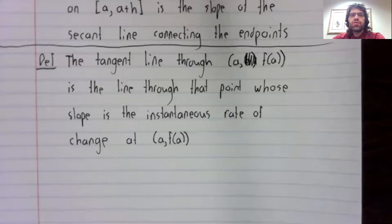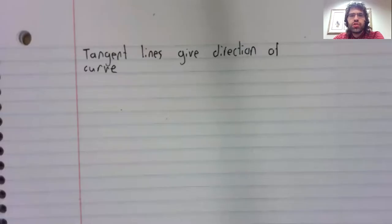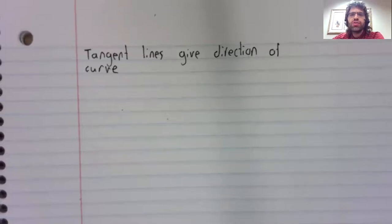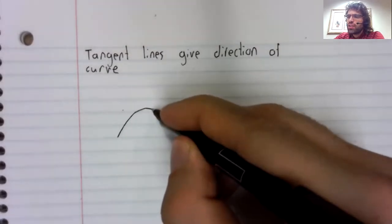What's our motivation for this? Tangent lines might sound kind of abstract, but they show up very frequently in real world situations, engineering problems, for example. Tangent lines give the directions of curves.